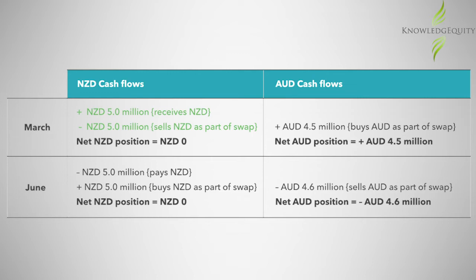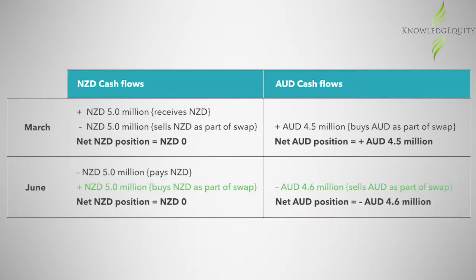The sell of 5 million New Zealand dollars in March offsets the initial receipts of New Zealand dollars and delivers 4.5 million Australian dollars, calculated as 5 million New Zealand dollars divided by 1.1111. The Australian dollars received can be invested until required in June to buy back the New Zealand dollars at the locked-in forward rate of 1.087. The purchase of 5 million New Zealand dollars in June is used to make the planned payment and requires 4.6 million Australian dollars, calculated as 5 million New Zealand dollars divided by 1.087.